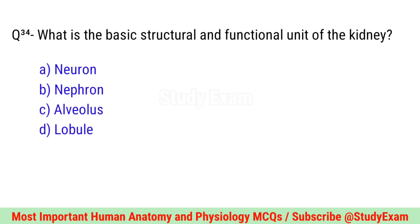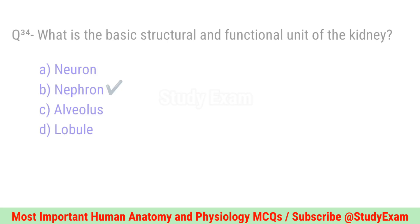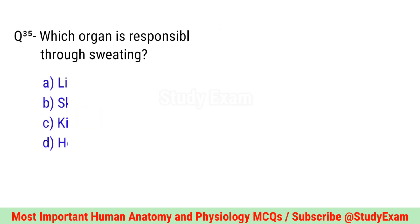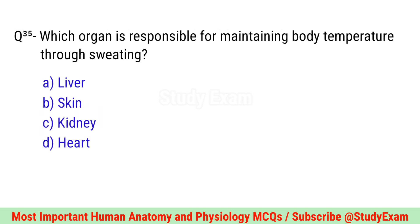Question number thirty-four. What is the basic structural and functional unit of the kidney? Correct option is B. Nephron.